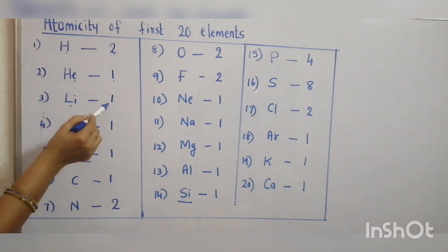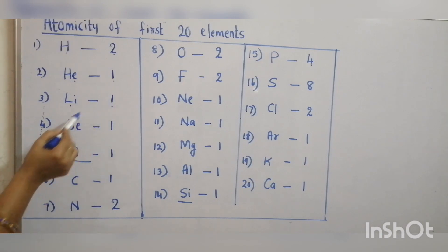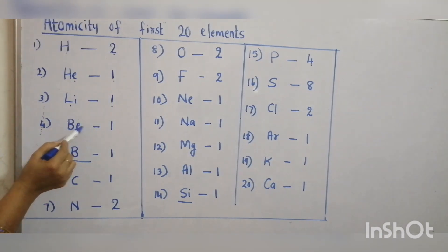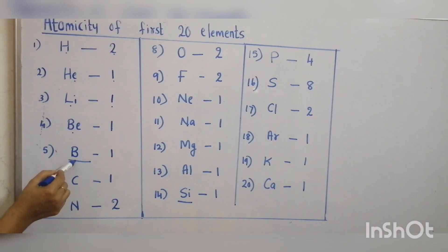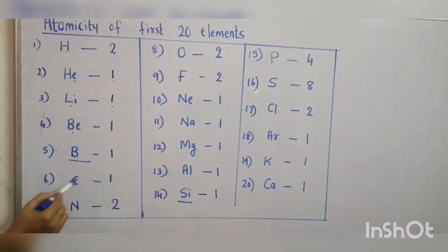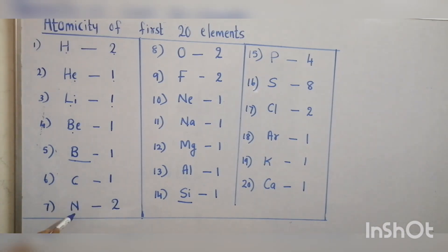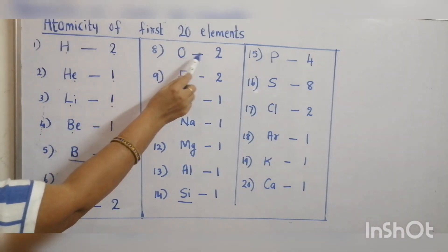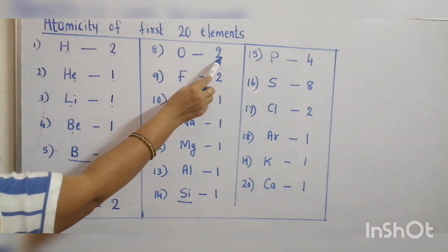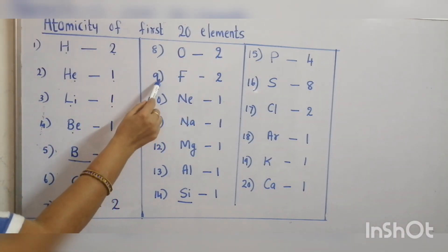Lithium, atomicity one. Beryllium, atomicity one. Boron is a metalloid, atomicity one. Carbon, atomicity one. Nitrogen is a diatomic gas, atomicity two. Oxygen is also a diatomic gas, atomicity two.